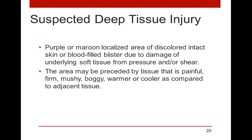Let's talk about deep tissue injury — the first pressure ulcer stage we'll define today. This is a newer category that we've sorely needed for years. A suspected deep tissue injury is purple or maroon, a localized discoloration that could be a blood-filled blister, often due to damage of the underlying tissue from pressure, shear, or friction. It could be firm or mushy, boggy, warmer or cooler. The key is to feel the tissue and assess what's going on in that wound bed.